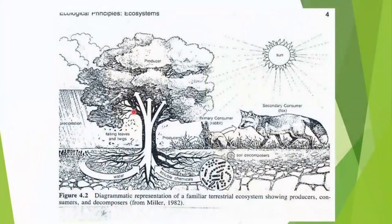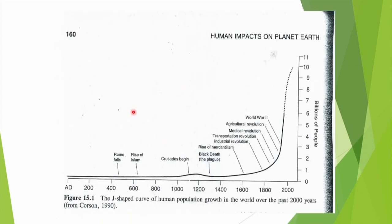Perhaps these pictures can best explain — which is of course a diagrammatic representation of how the terrestrial ecosystem works — showing the producers, consumers, and decomposers, and the linkages or interconnectedness among these basic components of our ecosystem.